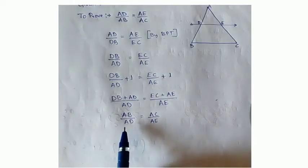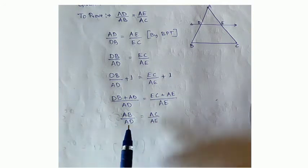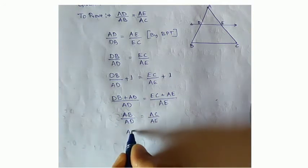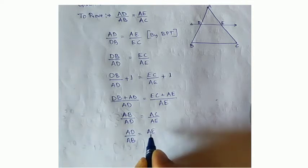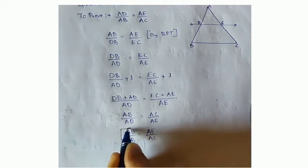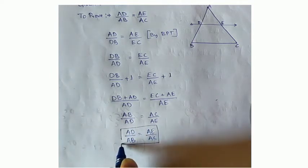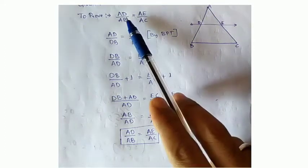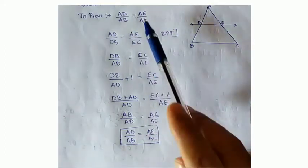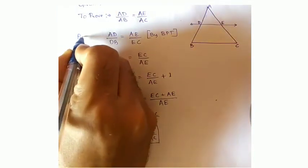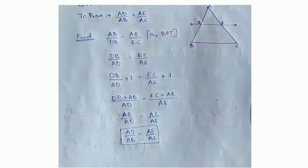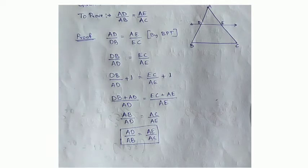Now again repeating the reciprocal. So AB by AD becomes AD by AB, and here also AE by AC — which is what we need. Here we got it. See here in the proof: AD by AB equals AE by AC. So write it as the proof. Like this we have to use the Basic Proportionality Theorem in finding the parts of a side of a triangle.